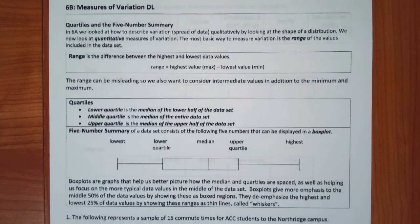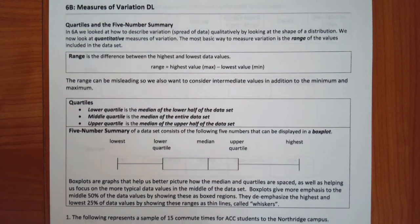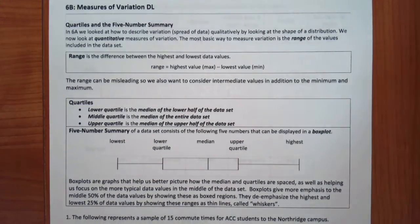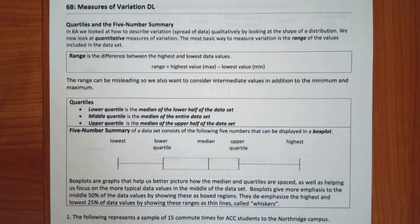So we're going to talk about variation, which is how spread out the data is. A word you've probably heard before is the range of values. When talking about mean, median, and mode, it's not uncommon to also discuss range. We looked at the distribution, which gives us a big-picture trend from a histogram or the general shape of a graph, but we want to look at quantitative measures of variation.